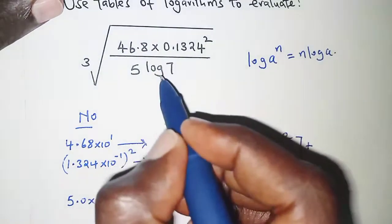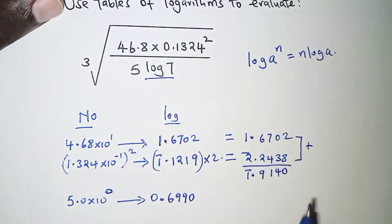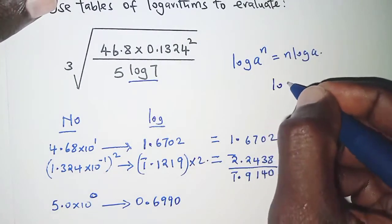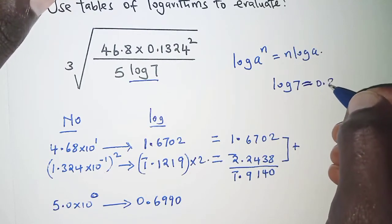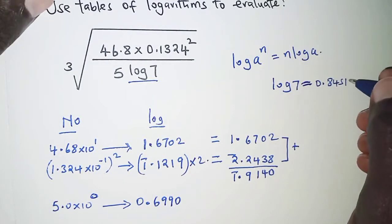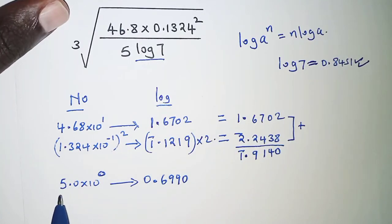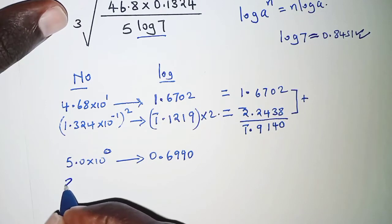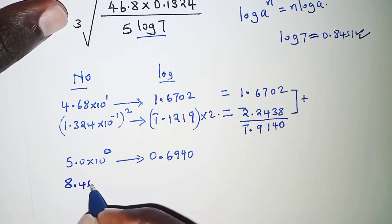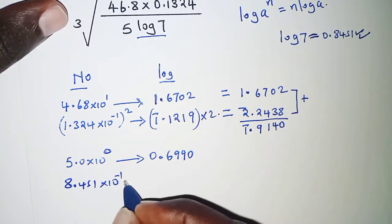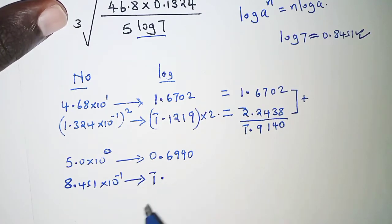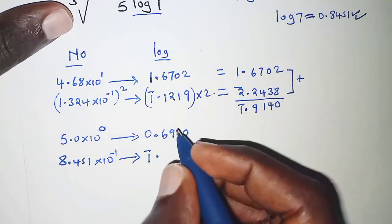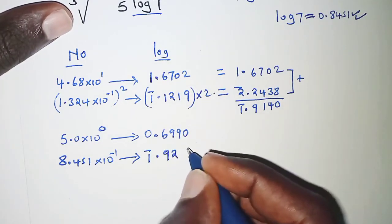We need to get logarithm of log 7. First we determine what log 7 is from our calculators directly, and that is 0.8451. This is what we write in standard form in this column, and then we get its logarithm. We begin by characteristic, that is bar 1, and then we get the logarithm of 8.451 from mathematical tables, which is 0.9270.